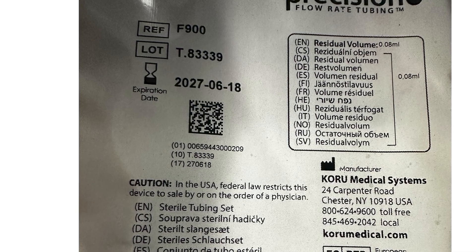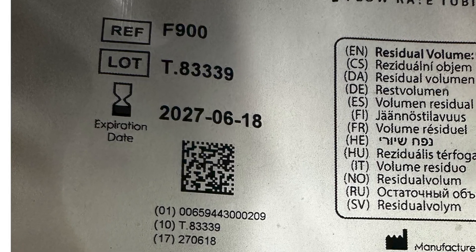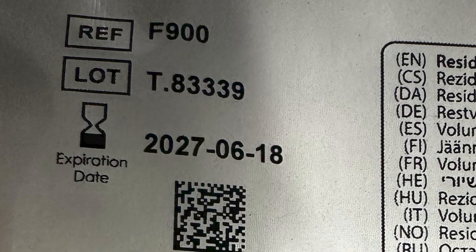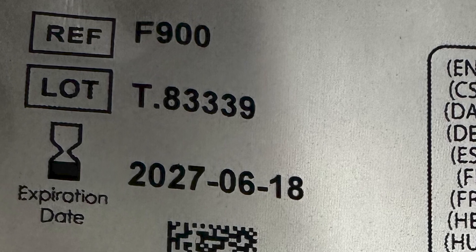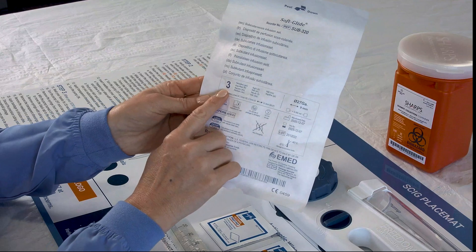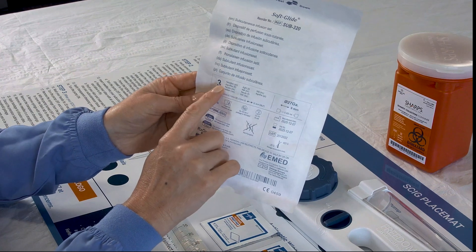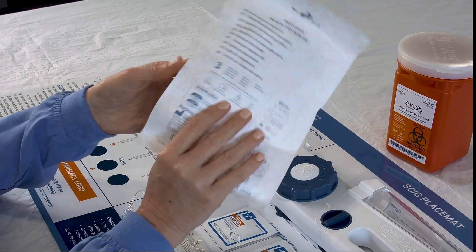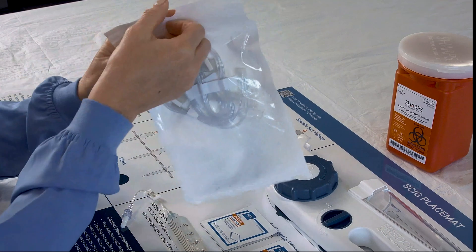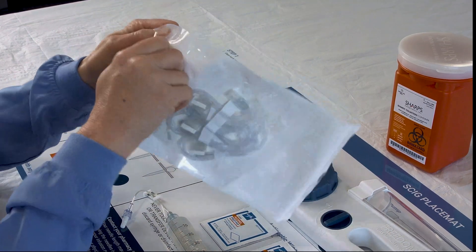After verifying that your precision tubing is the correct rate of infusion on your medication label, remove it from the packaging. Next, verify that your needle set tubing has the correct number of needle sites as instructed by your medication label. Remove it from the packaging.